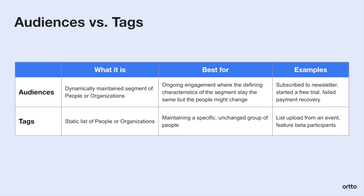You can also save filtered views that you need to come back to in two ways: either as an audience, which will dynamically maintain that segment, adding people as they meet criteria you filtered for or removing them when they no longer meet those criteria, or you can save by adding a tag. Tags will help you permanently maintain a static list of users.